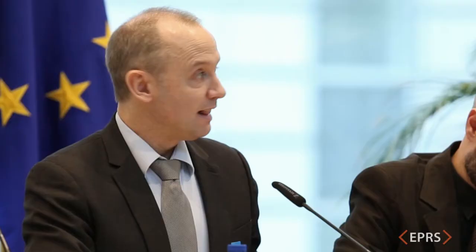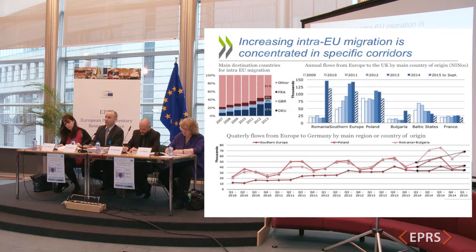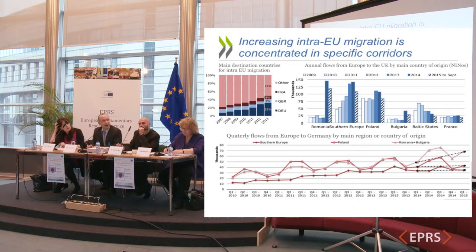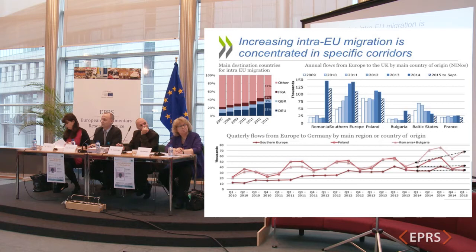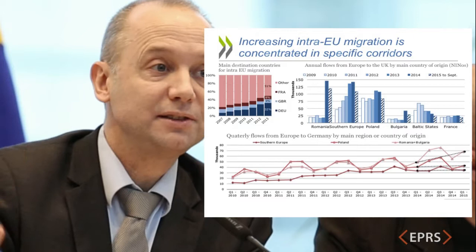Free movement has increased but also shifted in terms of origin and destination country. The share of Germany in total EU free movement is now close to a third, at 32%. The UK received about 9-10% of EU free movements, and France about 8%. So there is both an increase in free movement in the EU and a very rapid increase in Germany's share of that total.